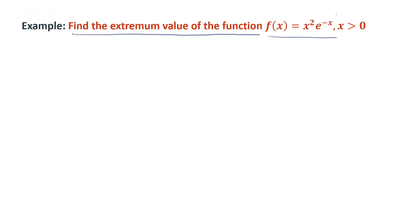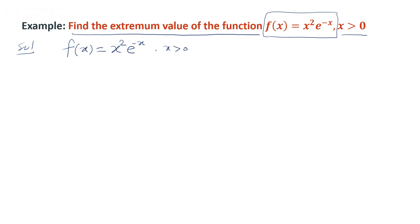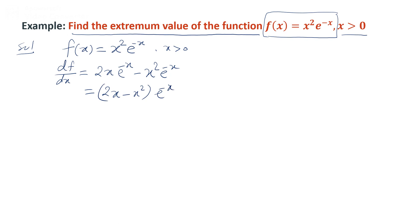Example: find the maximum value of f(x) = x² e^(-x) for all x ≥ 0. We need to find the extreme value, either maximum or minimum. First we take the first derivative df/dx, which gives 2x·e^(-x) minus x²·e^(-x).